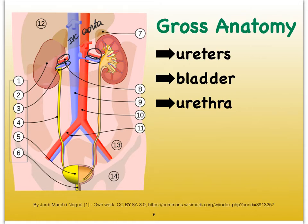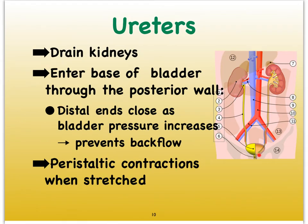The aorta splits as it enters into the pelvic area into the two common iliac arteries. Each ureter actually enters the bladder from the posterior side, dipping down and up before it merges with the bladder. By first descending and then curving up slightly before merging, the ureters' ends will close when the pressure in the bladder rises as urine collects in it, preventing backflow up into the ureters.